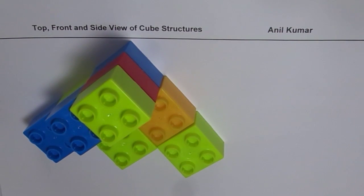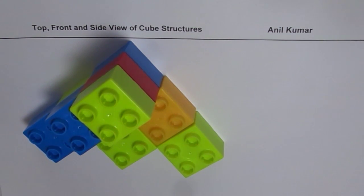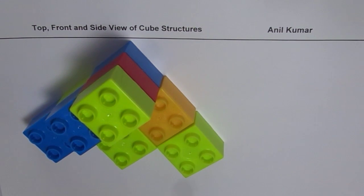I'm Anil Kumar and here is a very good test question for you. You need to sketch the top, front, and side view of this cubicle structure. We have a set of cubes arranged as you can see in this video. You can pause the video, look at it very carefully, and then sketch the front view, top view, and both the side views. You can also sketch the back side view.